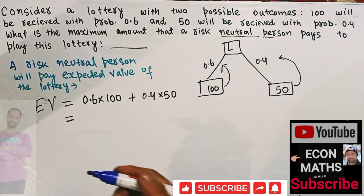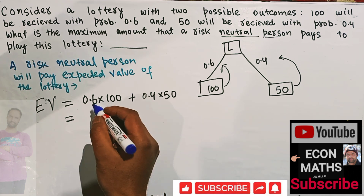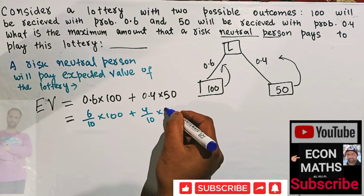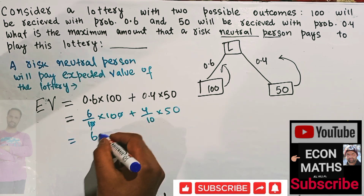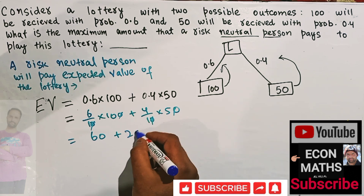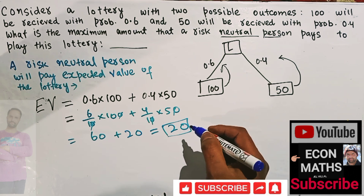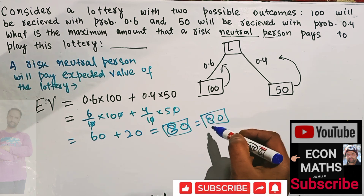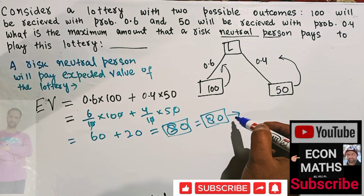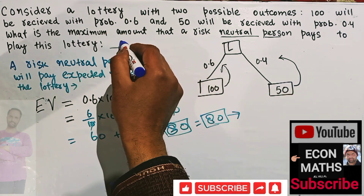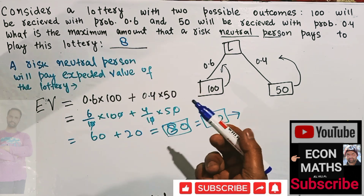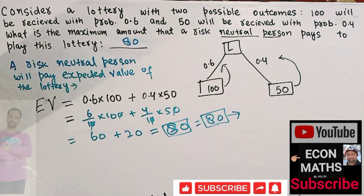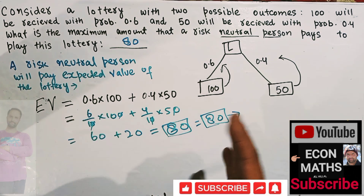So that is 6/10 into 100 plus 4/10 into 50. This gives us 60 plus 20, which equals 80. So a risk-neutral person will be willing to pay 80 rupees to play this lottery. This was a numerical answer-type question in the exam, and the answer is 80 rupees — the maximum amount a risk-neutral person would be willing to pay to play this lottery.